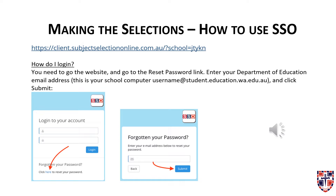To log in, you are required to go to that specific link shown on the screen — that is for our school — and you'll need to go to the reset password link. You'll then need to enter your Department of Education email address. This is your school username with @student.education.wa.edu.au and click Submit. Once you've clicked Submit, please return to your Department of Education email and you're able to utilise that to help reset your password.